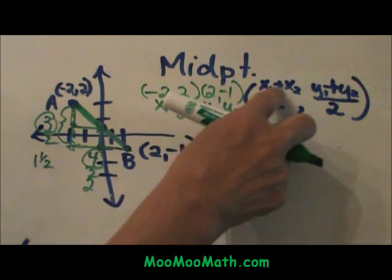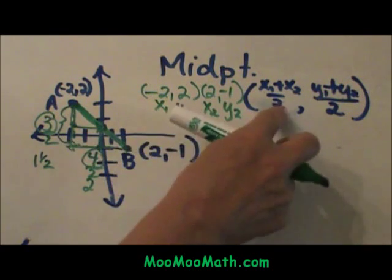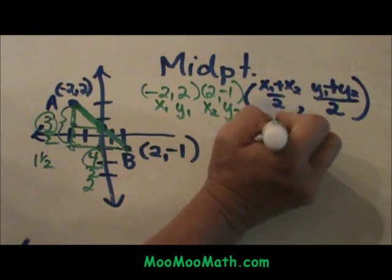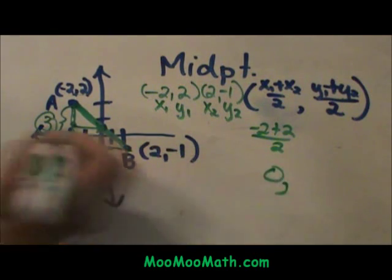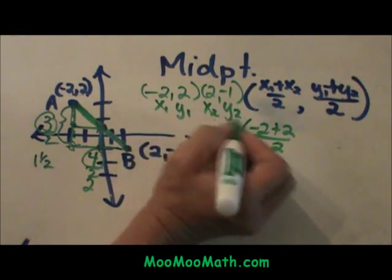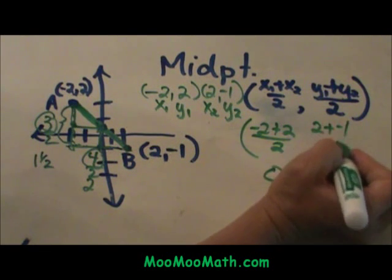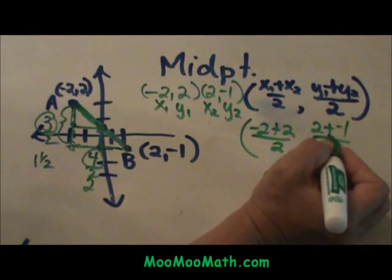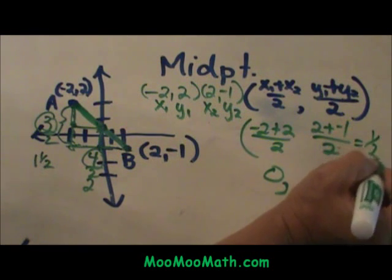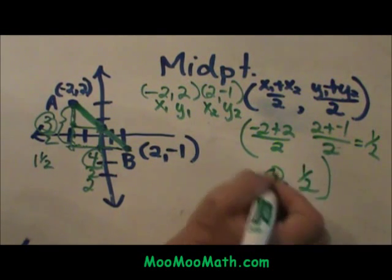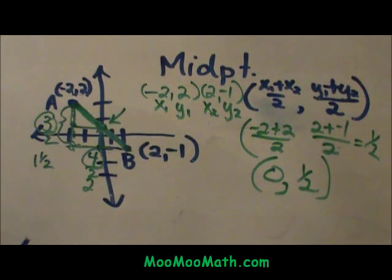I am going to take x1 plus x2 and divide it by 2. So negative 2 plus 2 over 2 is 0 over 2 or just 0. Then I am going to do the same thing with my y coordinates. 2 plus negative 1 all over 2. 2 plus negative 1 is positive 1. 1 over 2 is just a half. So that means my ordered pair is at 0, 1 half. And that is my midpoint.